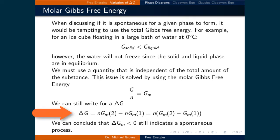We can still write for a change in Gibbs free energy that the total number of moles times the molar Gibbs free energy of that phase, denoted with a 2, minus the total number of moles times the molar Gibbs free energy of the second phase, denoted with a 1. We can distribute out the number of moles so that the difference is simply between the molar Gibbs free energies. We can conclude that a change in molar Gibbs free energy being less than zero still indicates a spontaneous process.